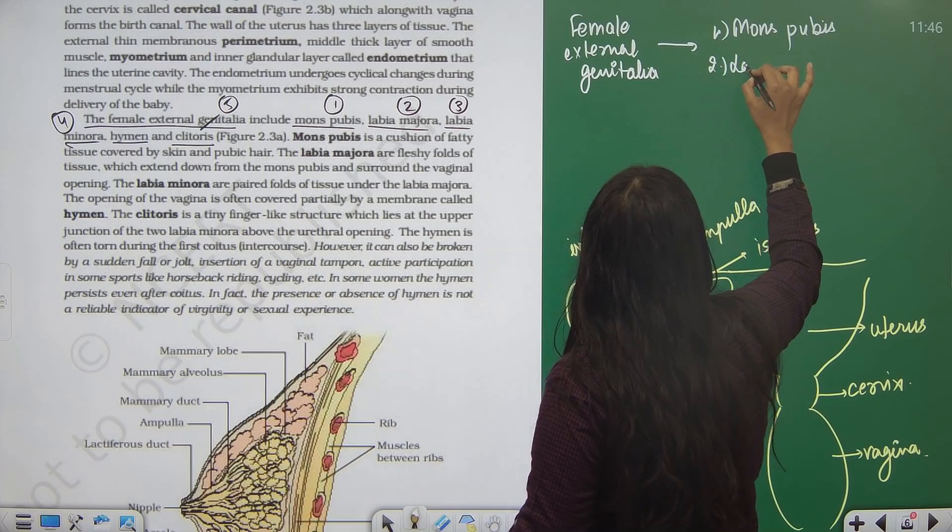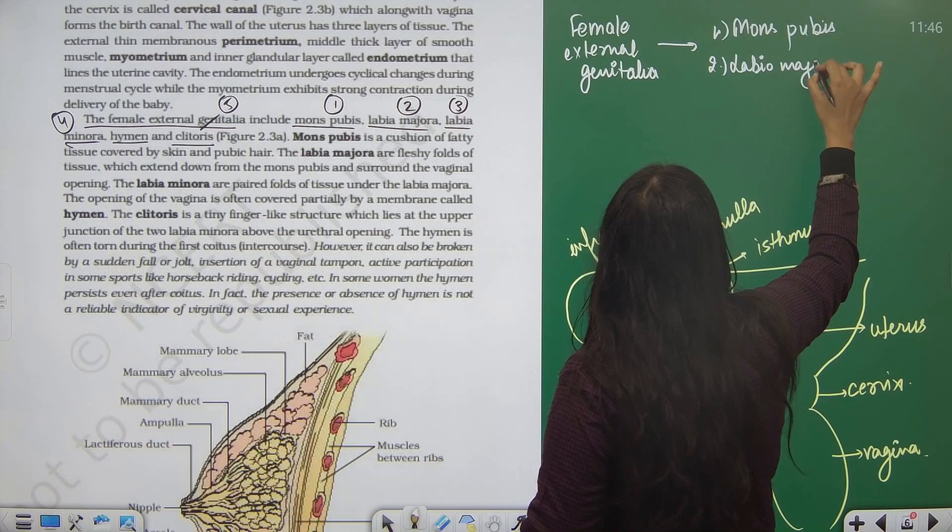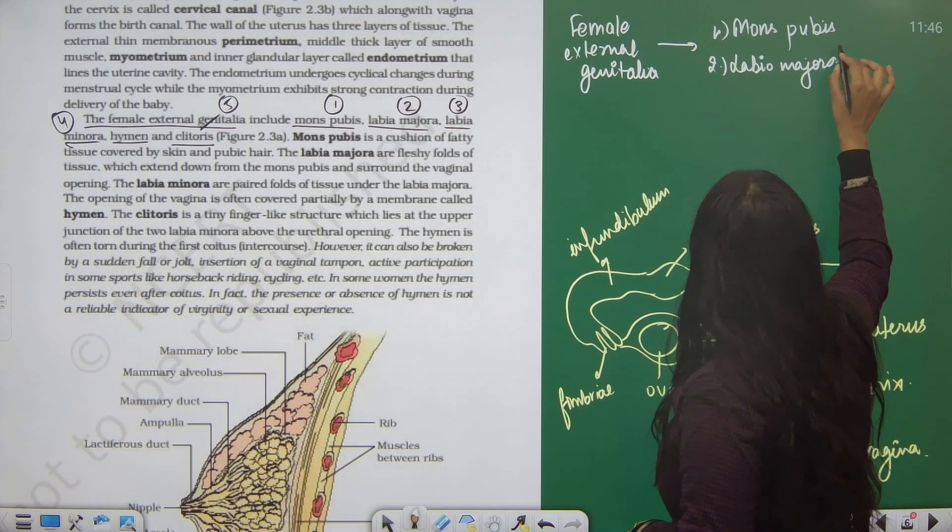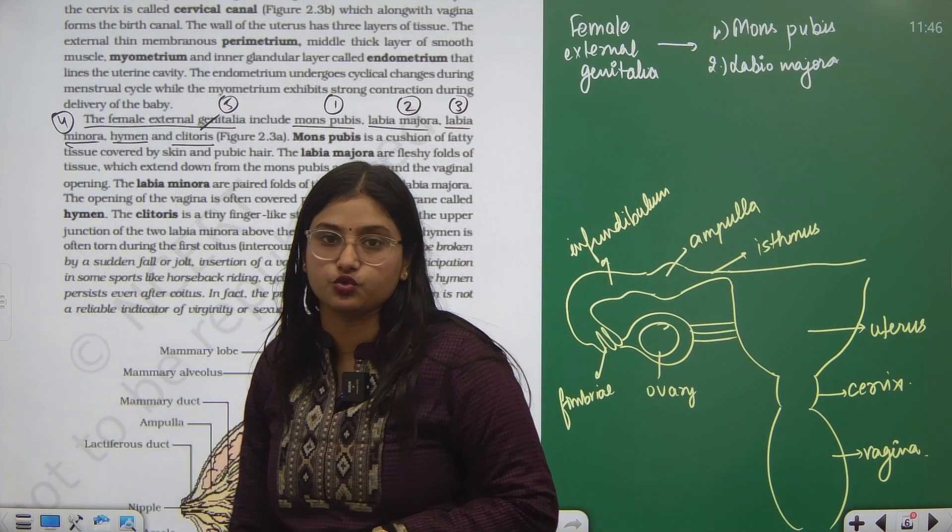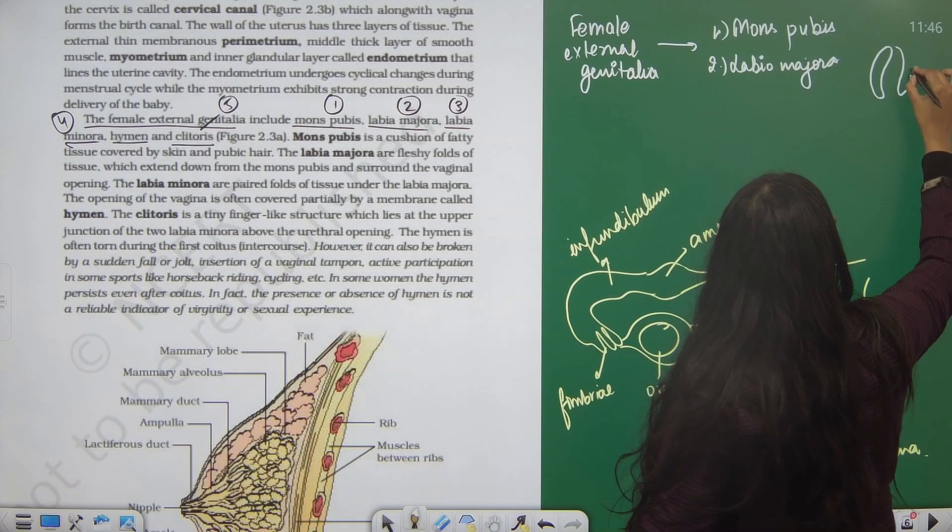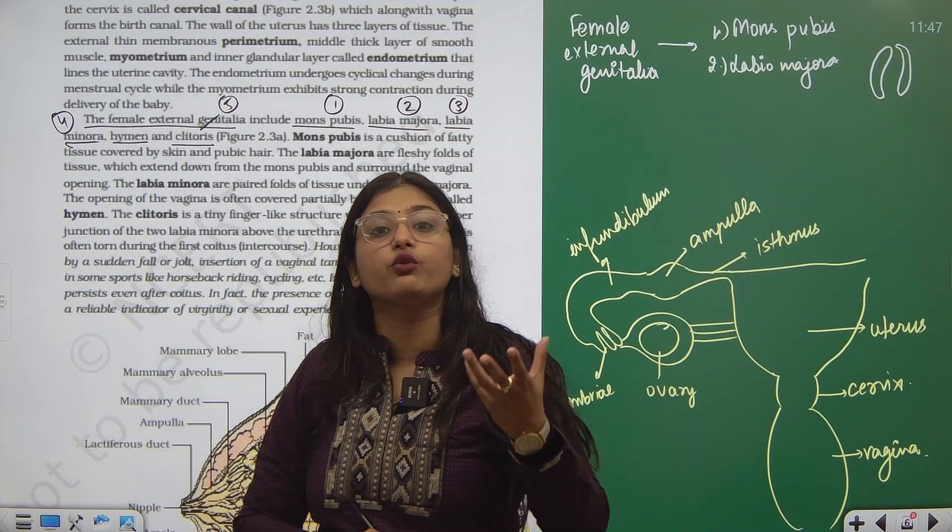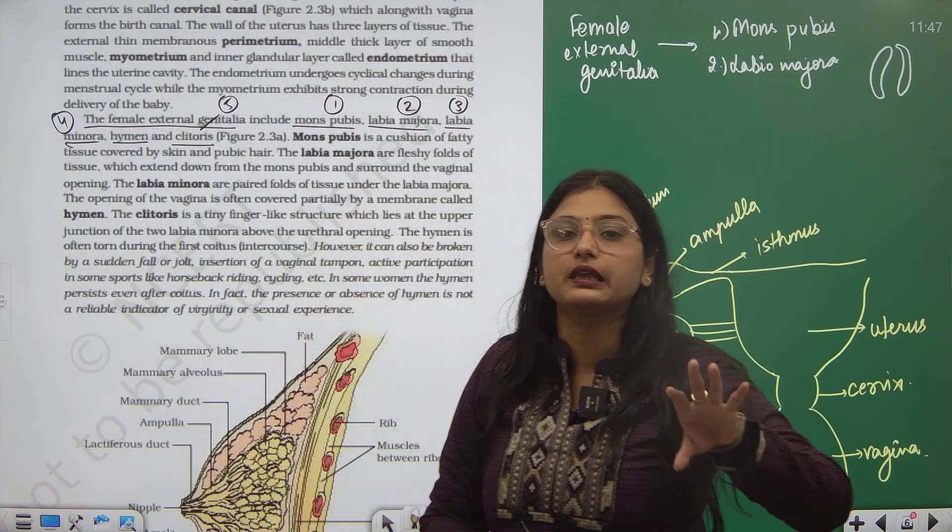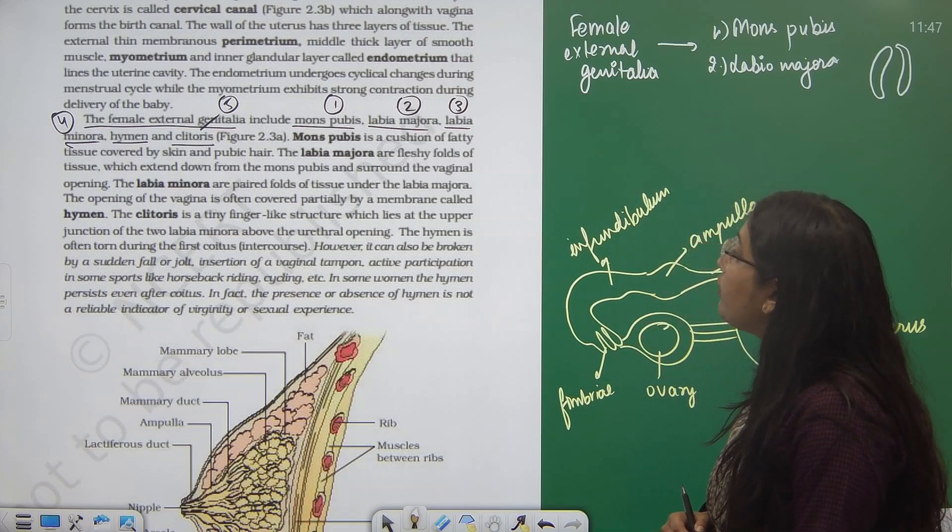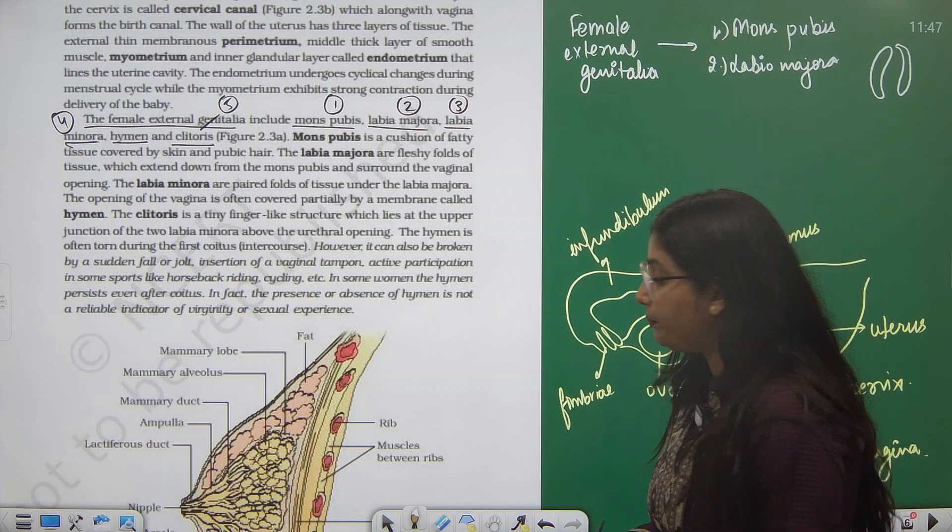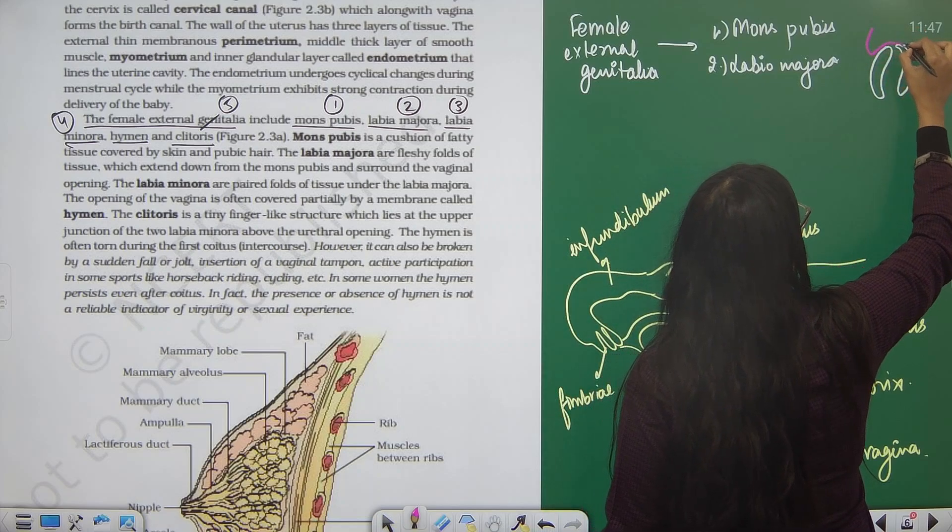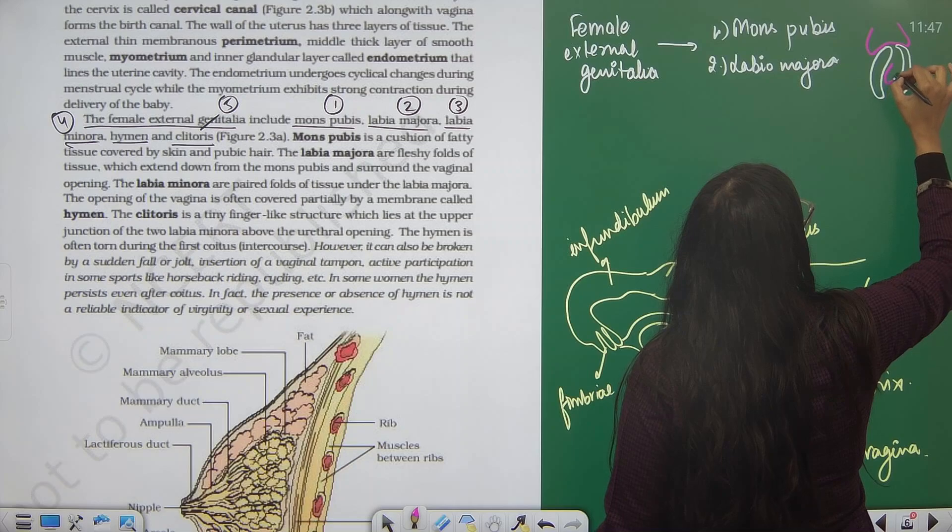Then the second structure is labia majora, a mons pubis extension. Labia majora are fleshy folds of tissue which extend down from mons pubis and surround the vaginal opening.